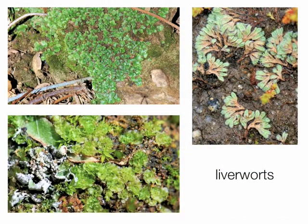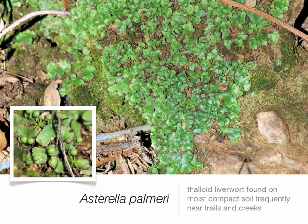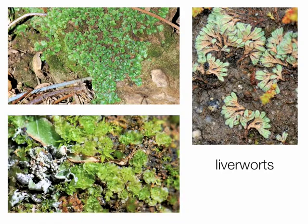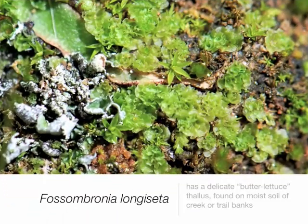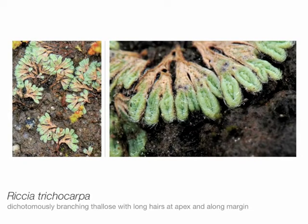Now liverworts, very characteristic of moist soils — soil surrounding a rock outcrop and seasonally moist. Our first species is Asterella palmeri, a thallose liverwort with a flattened body, very common in Mediterranean regions. Leafy liverworts are more common in wet climates. It has a dichotomous branching pattern. Next is Fossombronia longiseta, whose thallus has a very characteristic butter-leaf lettuce appearance. Finally, Riccia trichocarpa — another thallose liverwort — has an oval oblong thallus with hairs at the tip and along the margins.